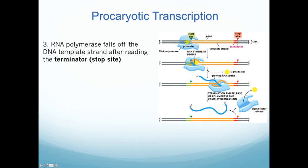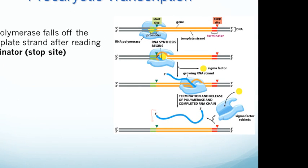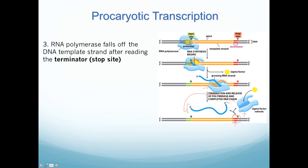Once the transcript is made, the RNA polymerase will hit what's called a termination site — a special sequence on the DNA that tells the RNA polymerase to stop transcribing. Once it hits this transcriptional stop site, the RNA polymerase falls off the DNA and can go back to start and transcribe more. So the three key things for bacterial transcription are the promoter region, the sigma factor, the RNA polymerase itself, and the termination signals.